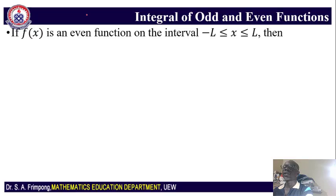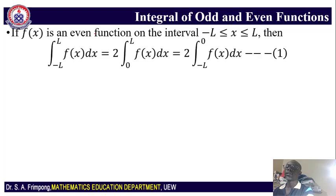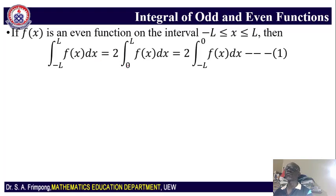If f(x) is an even function on an interval from negative l to l, then the integral from negative l to l of f(x) dx is the same as 2 times the integral from 0 to l, or 2 times the integral from negative l to 0 of the same function.